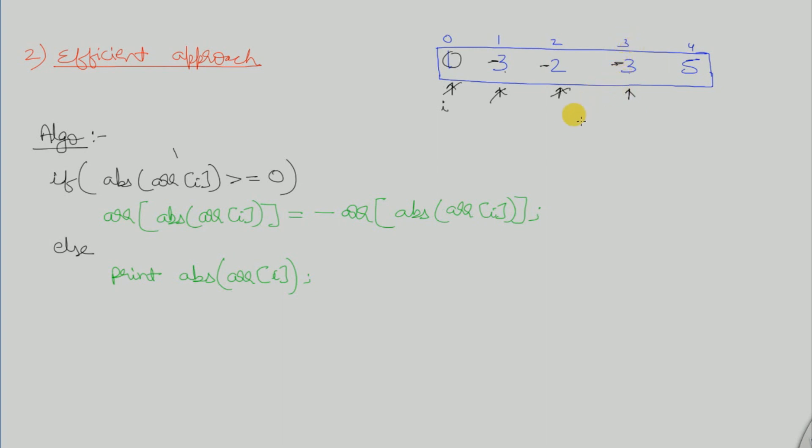We check the absolute value of array[i], which is array[3], already -3. The absolute value is 3. We check if array[3] is greater than 0. It's a negative element, so this is our duplicate element. The absolute value gets printed, so the answer is 3.